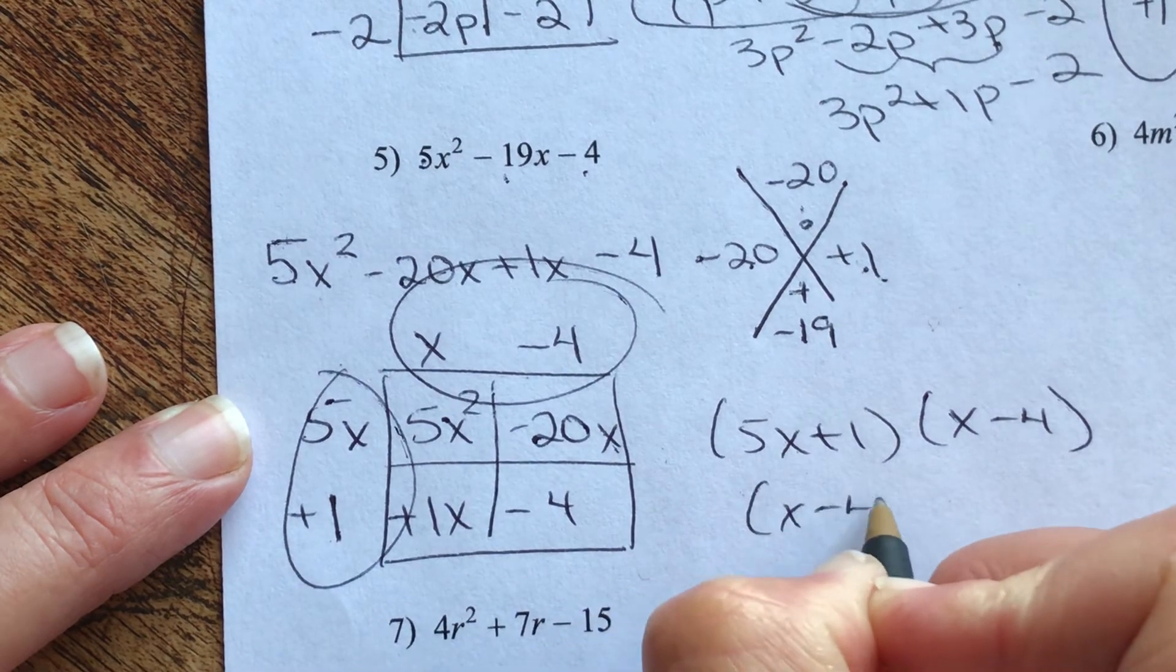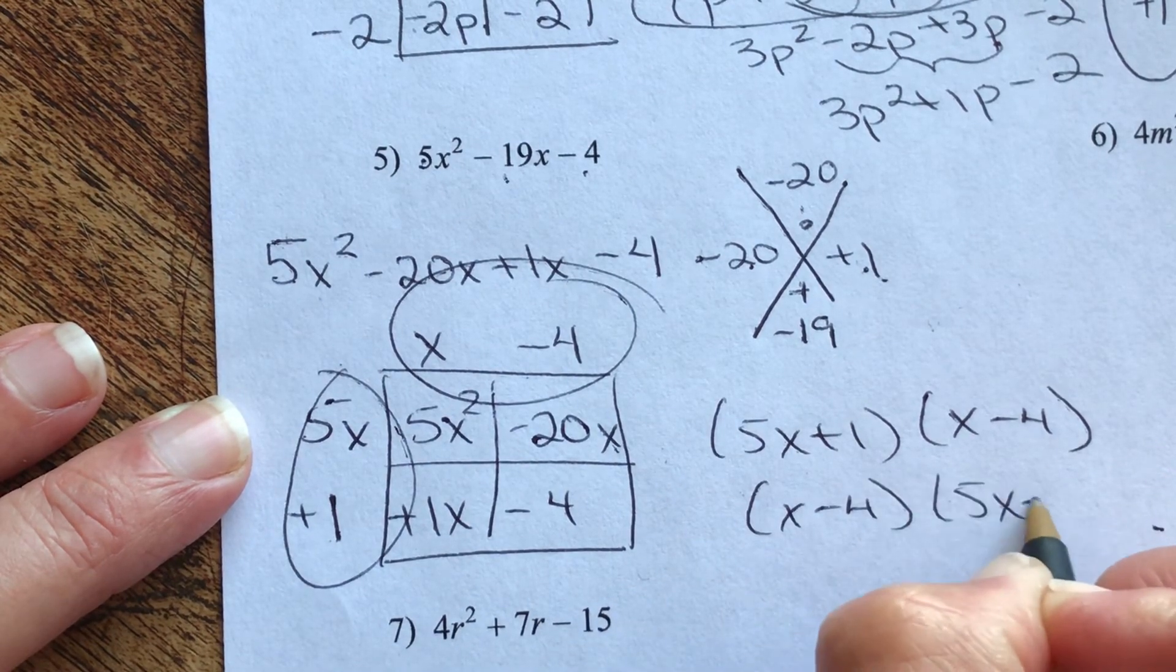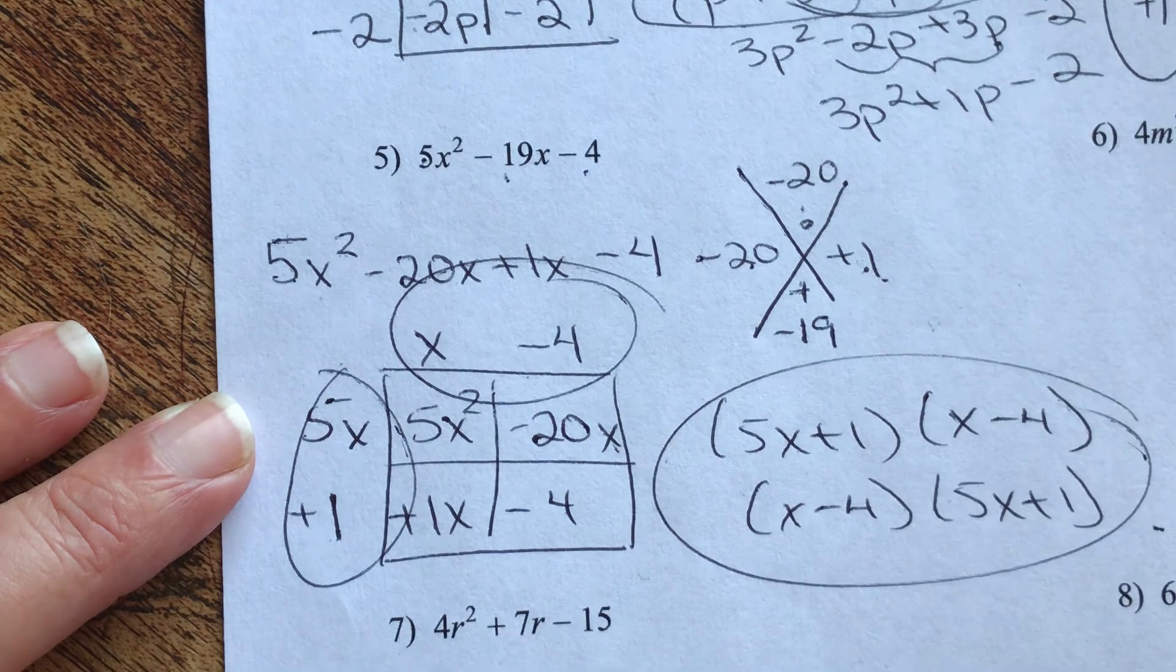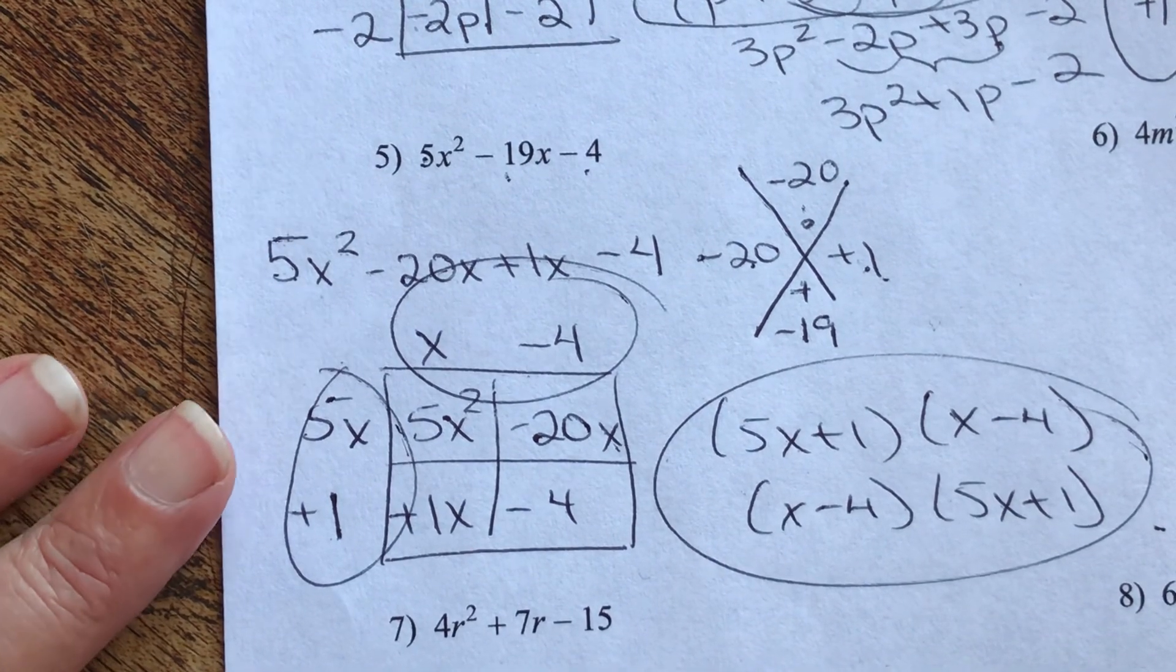So 5x plus 1 and x minus 4, or x minus 4 and 5x plus 1. Either one of those is your answer. It's up to you which one you'd like to go with.